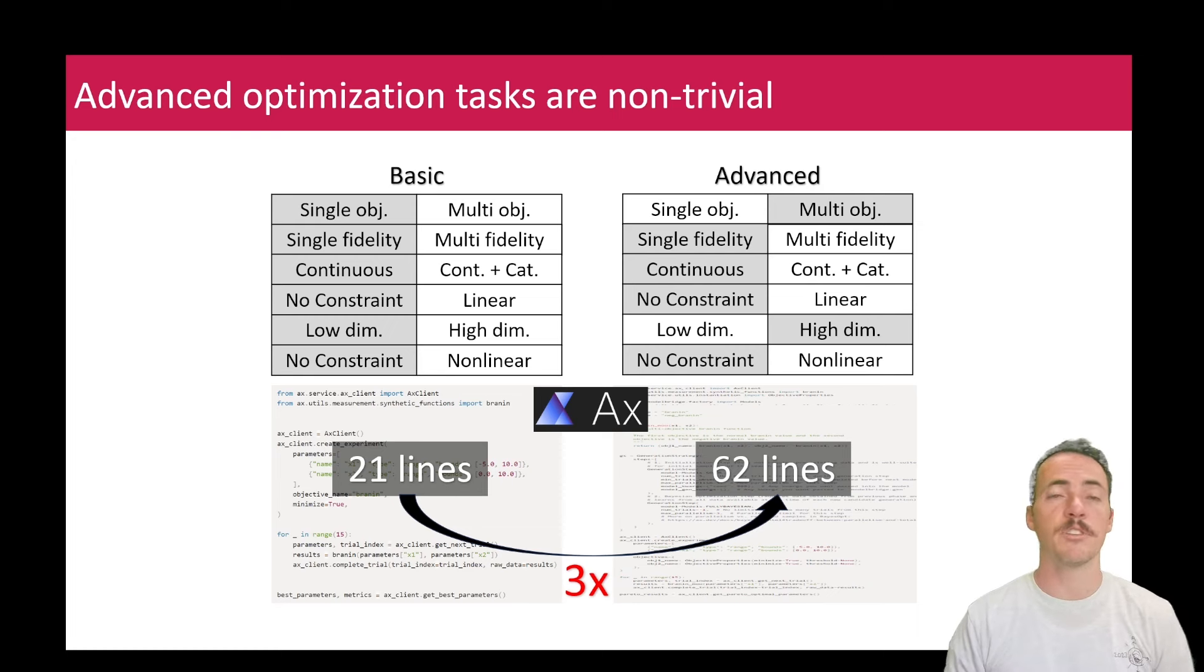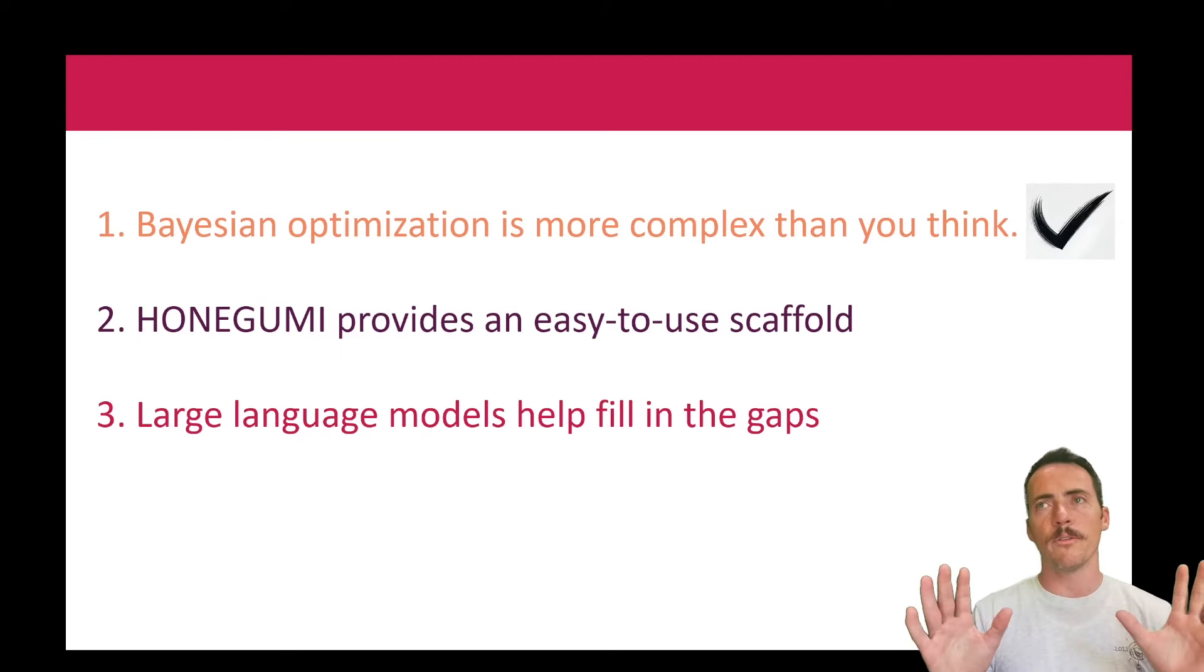And what we observe is that the amount of code necessary to implement Bayesian optimization, whether you're doing basic versus advanced, is very different. Now here in what we use in Honogumi is Axe. We like Axe. It comes from Meta. Some people make Facebook, right? They have made some awesome free to use tools. Axe is based on top of Botorch, which is based off of GPyTorch, many other things, right? But we like Axe. And here you see that the basic implementation of Bayesian optimization is about 21 lines of code.